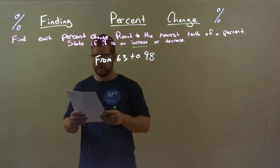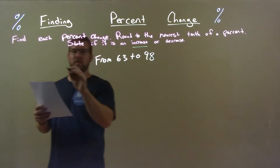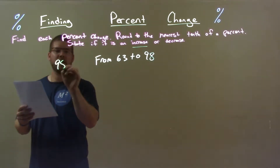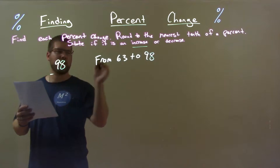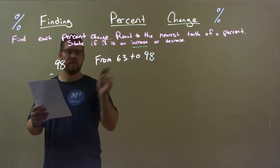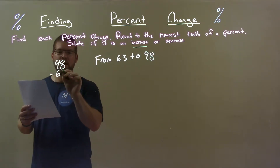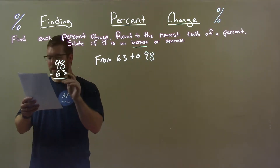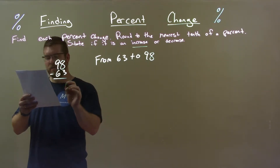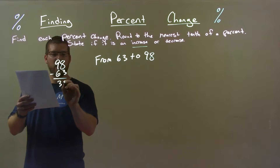Now find the difference between these two numbers. Larger number, 98, subtracted by the smaller number, 63. That gives us 35.